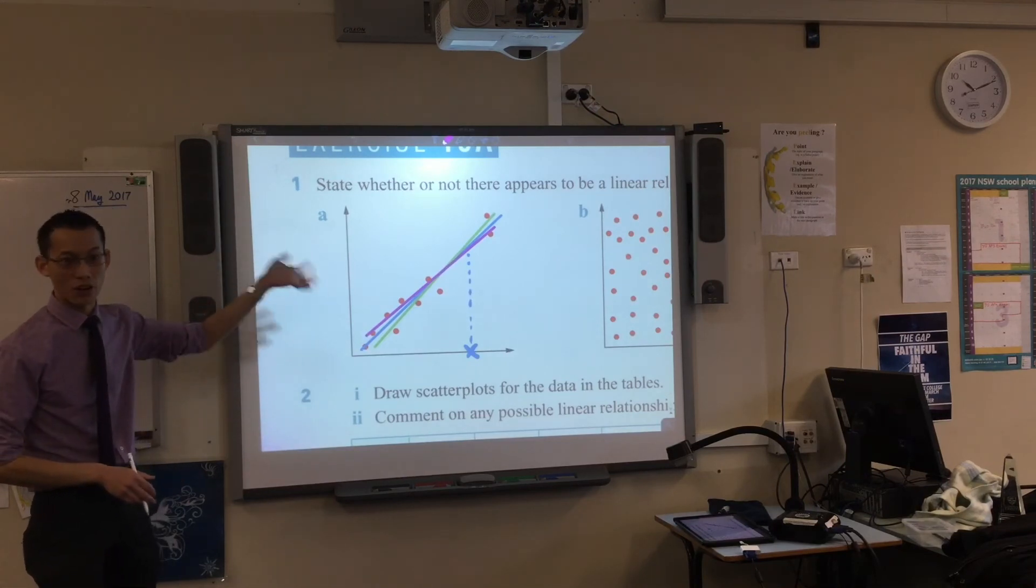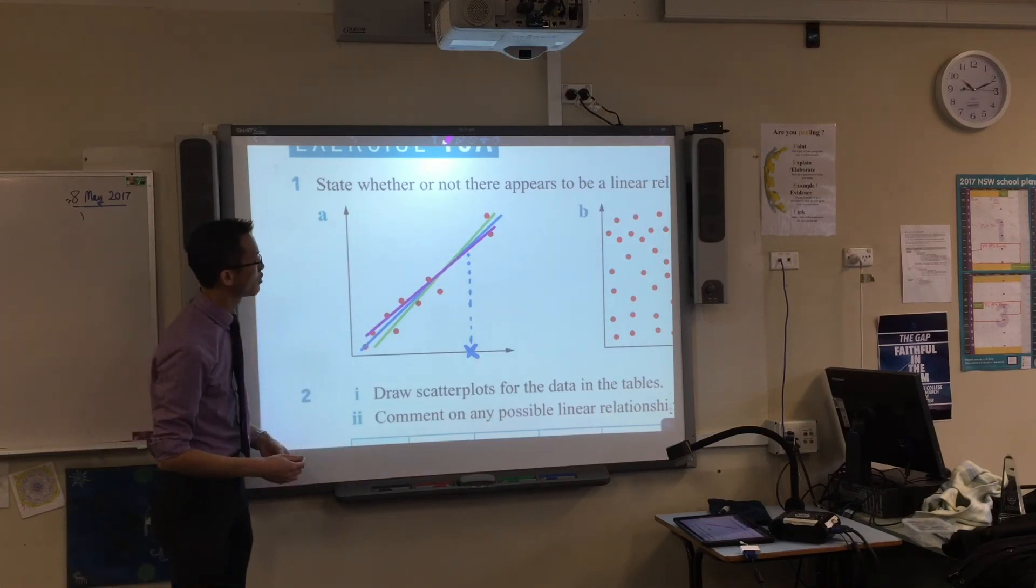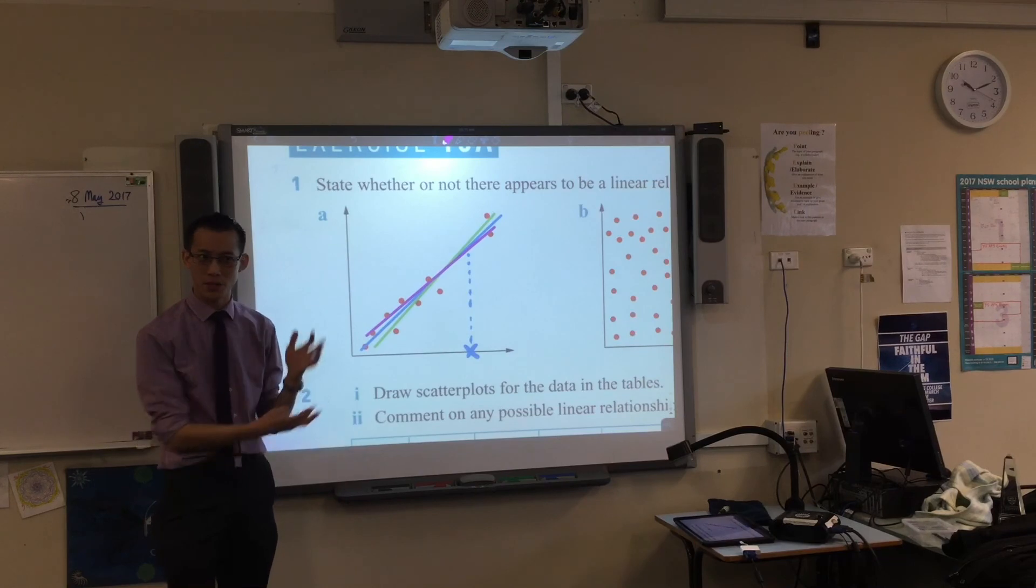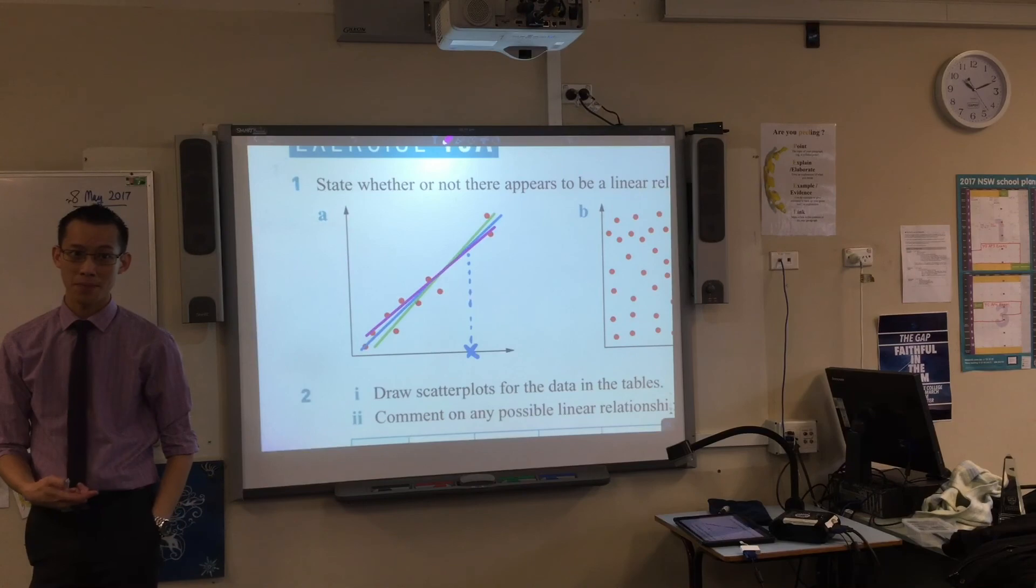So, line of best fit is what I'm going to call it most frequently because I think that's the most descriptive. You'll also hear it called a trend line, that's another common name. There's a bunch of different names for the same idea. It's a line that roughly passes through the center of all of your data, okay?